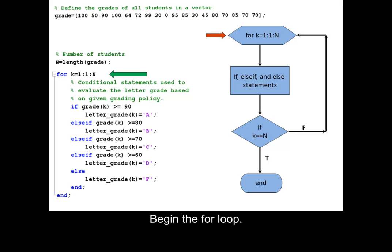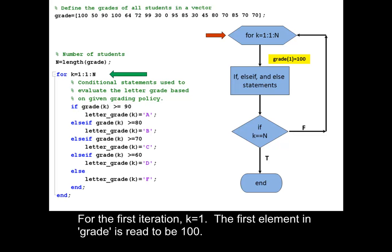Begin the for loop. For the first iteration, k equals 1. The first element in grade is read to be 100.